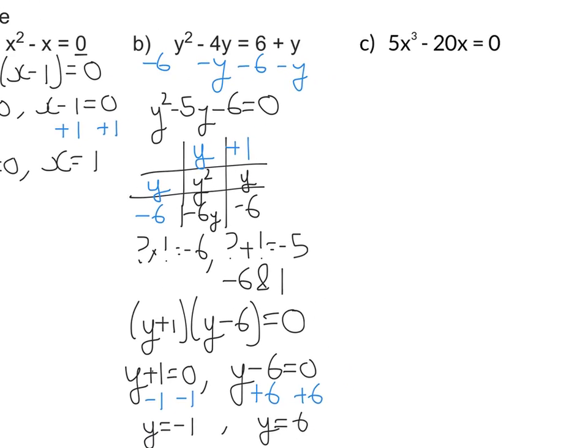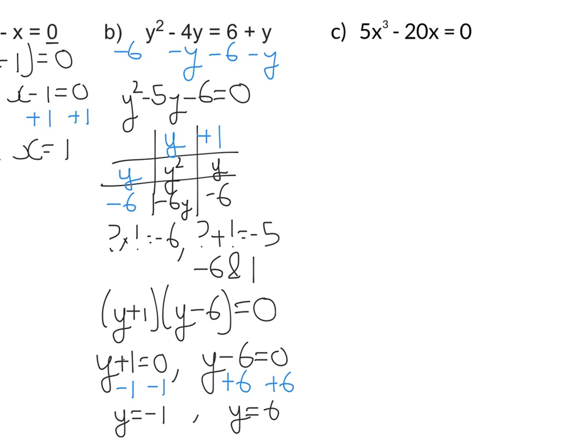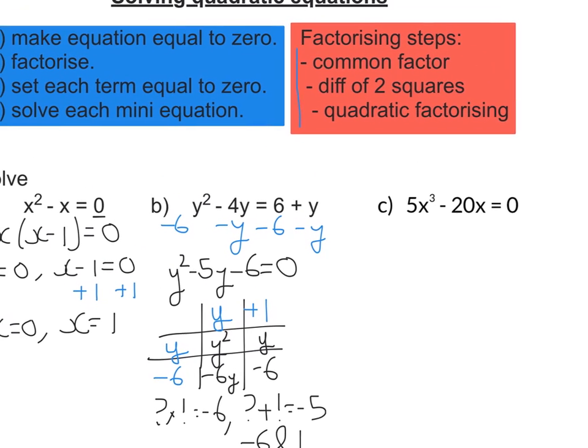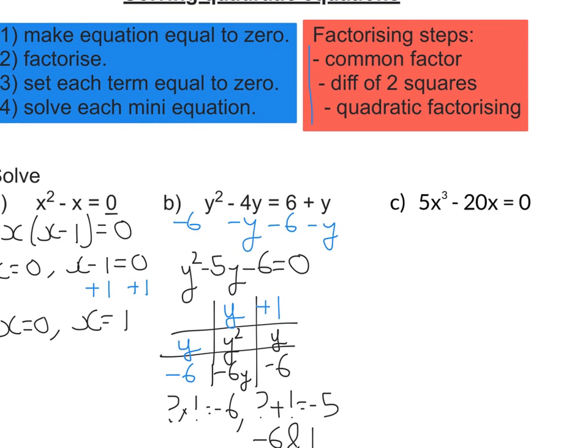Okay, let's look at our last one here. 5x³ - 20x = 0. Bringing our steps. So the first one is make equation equal to zero. That's done. Second is factorize. Well, there is a common factor here, so let's take that out. That seems to be 5x. So then we are left with 5x(x² - 4) = 0.